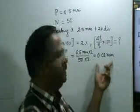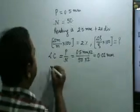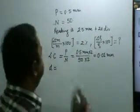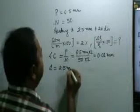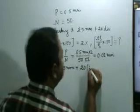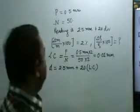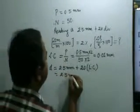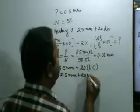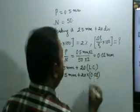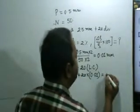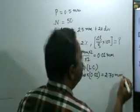Now what is the diameter of the ball? The reading is: d = 2.5 mm (main scale reading) plus 20 divisions on the circular head multiplied by the least count. So d = 2.5 mm + 20 × 0.01 mm = 2.5 + 0.2 = 2.70 mm. So the diameter of the ball is 2.70 mm.